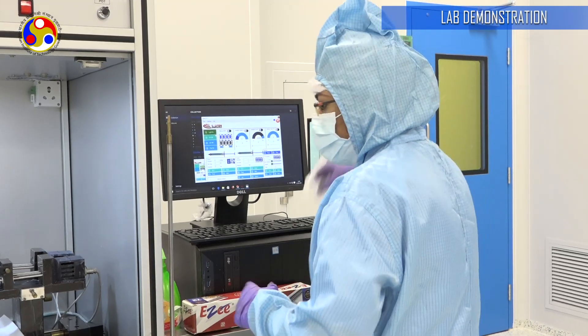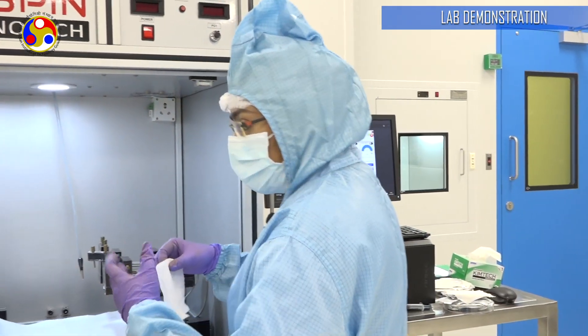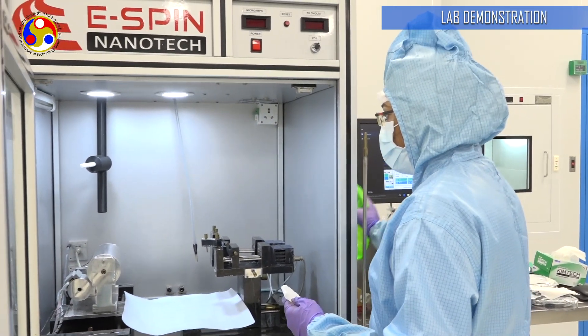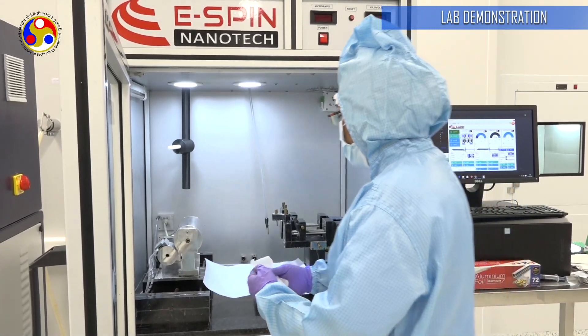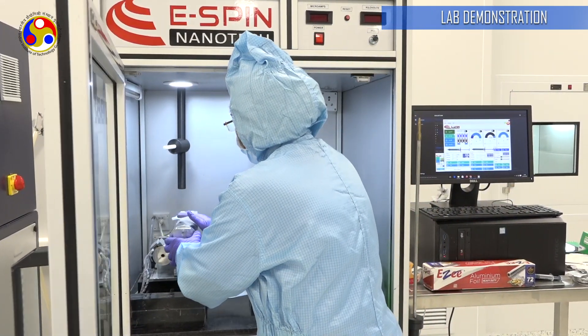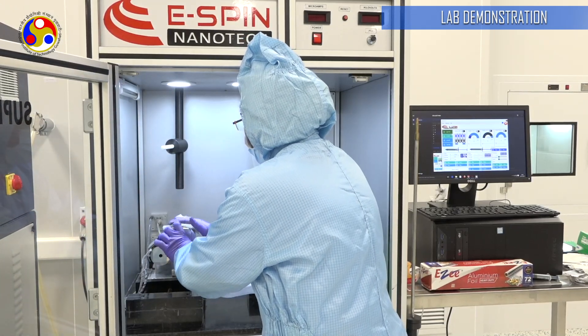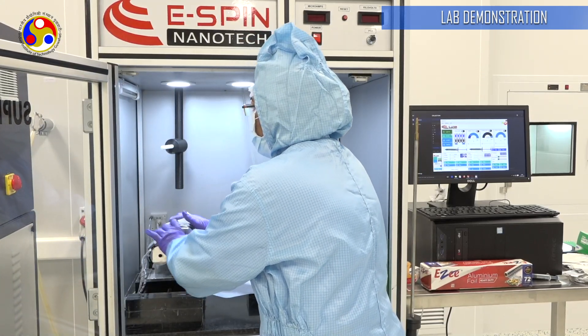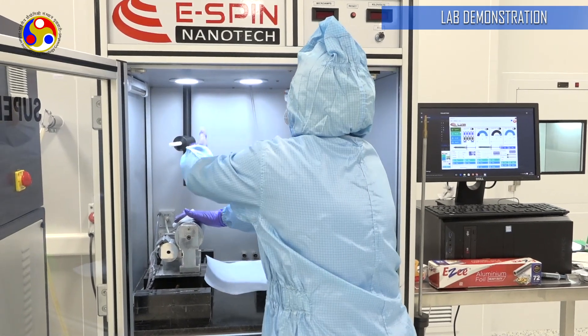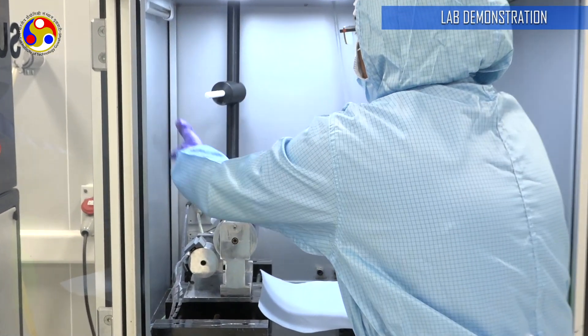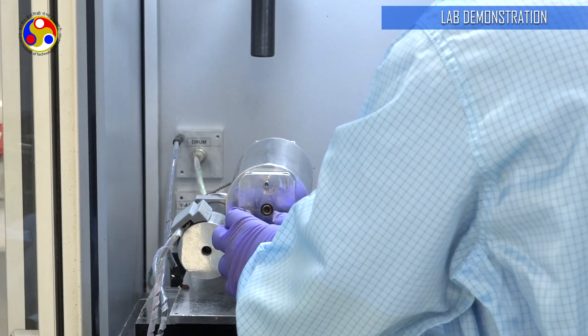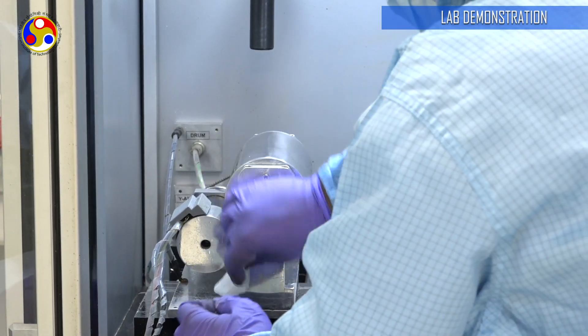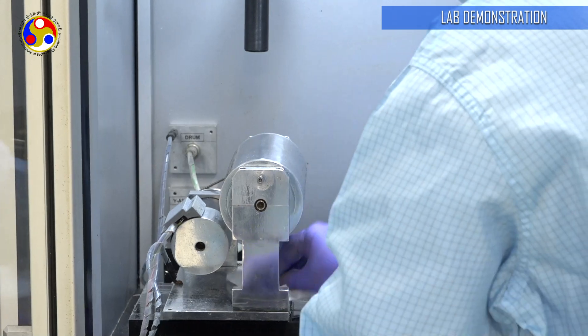The final step is to clean the machine after use. Because we typically apply a high voltage between the collector and the source, because of the strength of the electric field, a lot of fibers get deposited inside the chamber everywhere, in the ceiling, in the sides. It's important to keep the machine clean after use so that no contamination can occur in the future.